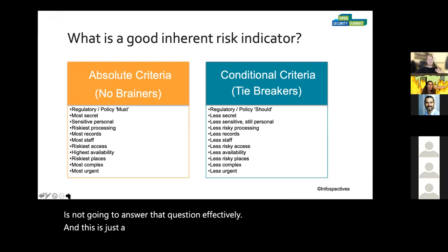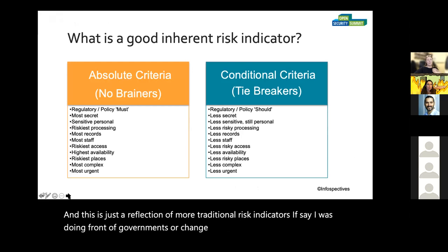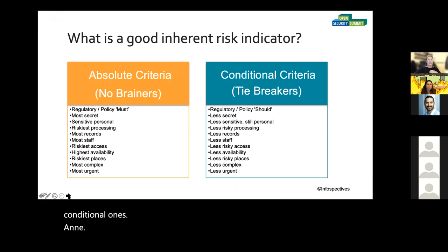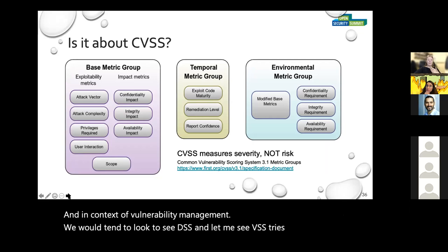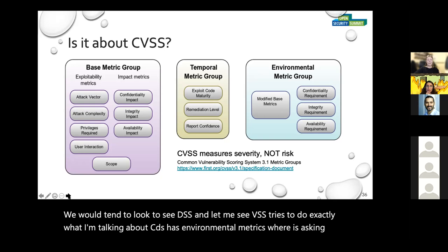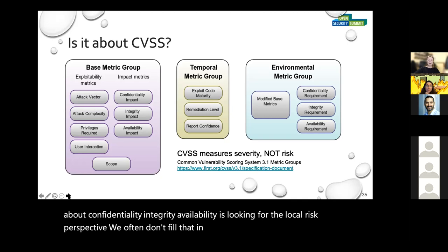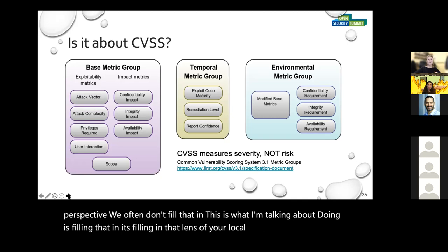This is a reflection of more traditional risk indicators in the context of vendor governance or change assurance — the absolutes and the conditional ones. In the context of vulnerability management, we would tend to look to CVSS. And CVSS tries to do exactly what I'm talking about: CVSS has environmental metrics where it's asking about confidentiality, integrity, and availability. It's looking for the local risk perspective. We often don't fill that in. What I'm talking about doing is filling that in — filling in the lens of your local assets and their associated risk indicators.